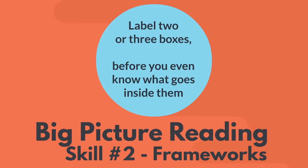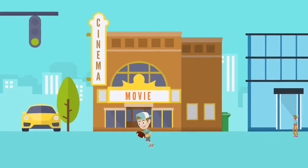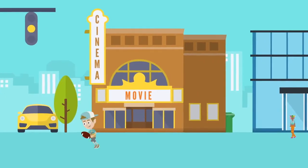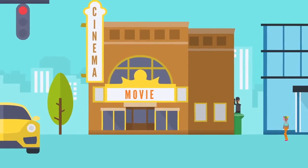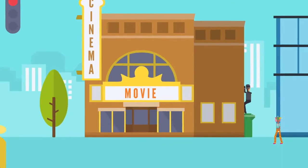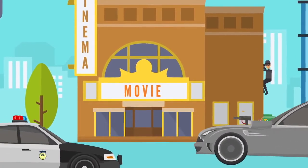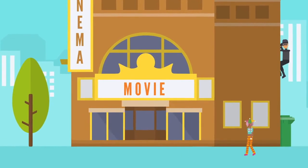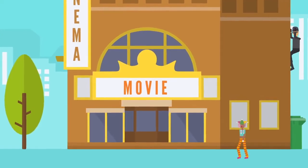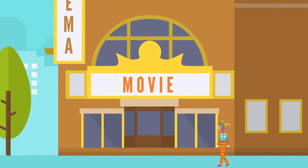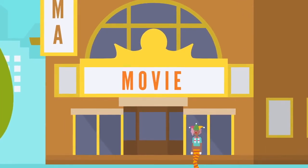Once we find the first part, we can figure out and pre-label the other boxes that we will be reading to fill in. Remember, this is still a standardized test. And just like Hollywood, standardized tests kind of need to stick to a few formulas. So there aren't that many different genres of Reading Comp passages, and once we get used to them, we have a better sense of what to expect.